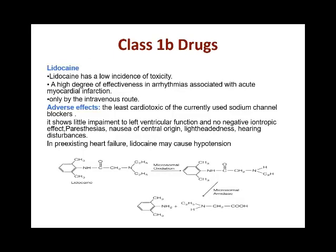Class 1B: lidocaine is another example and is effective for treating arrhythmia, particularly in acute myocardial infarction. It can only be given by IV route and can cause impairment of left ventricular function due to its negative inotropic effect. Side effects include CNS anesthesia, nausea, light-headedness, and hearing disturbances. In patients with heart failure, it can cause hypotension.